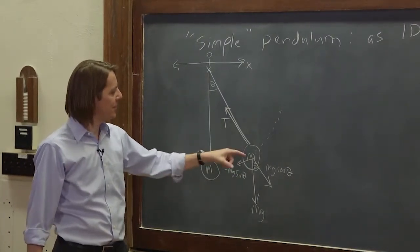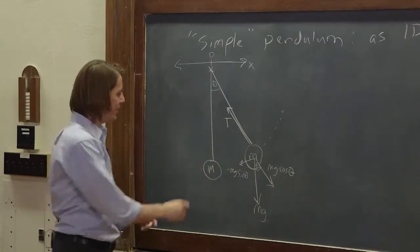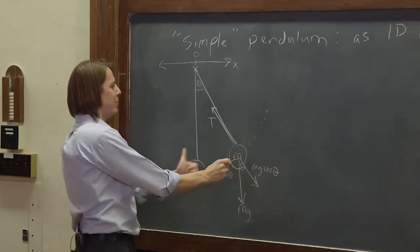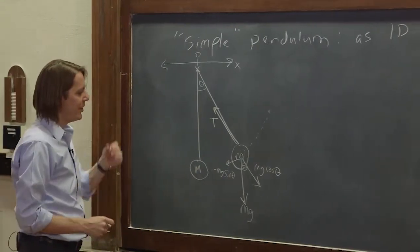Rather than ignoring tension and think about mg, we're going to ignore mg and think about the tension. Because if you think about it this way, what's pulling it in x is the tension. When it's up here, there's a component of tension pulling it back. And when it's over there, there's a component of tension pulling it back. So let's think about it that way.